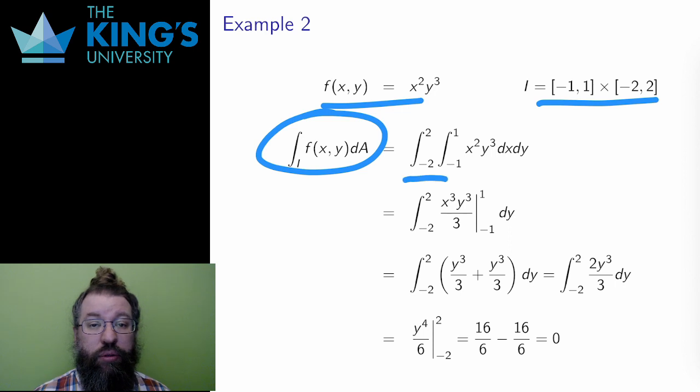I set up the iterated integral, choosing to put x on the inside and y on the outside, being careful to match up the bounds. Then I do the x integral first. The antiderivative of x squared is x cubed over 3. Then I evaluate on the x bounds.